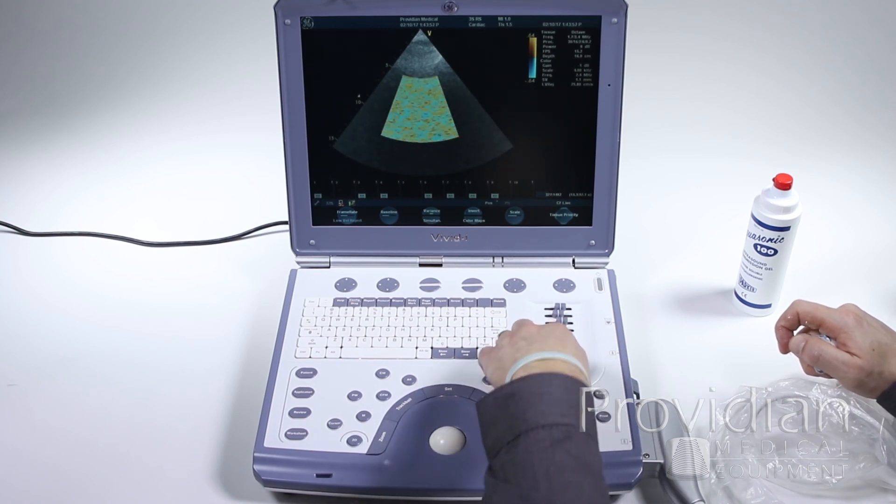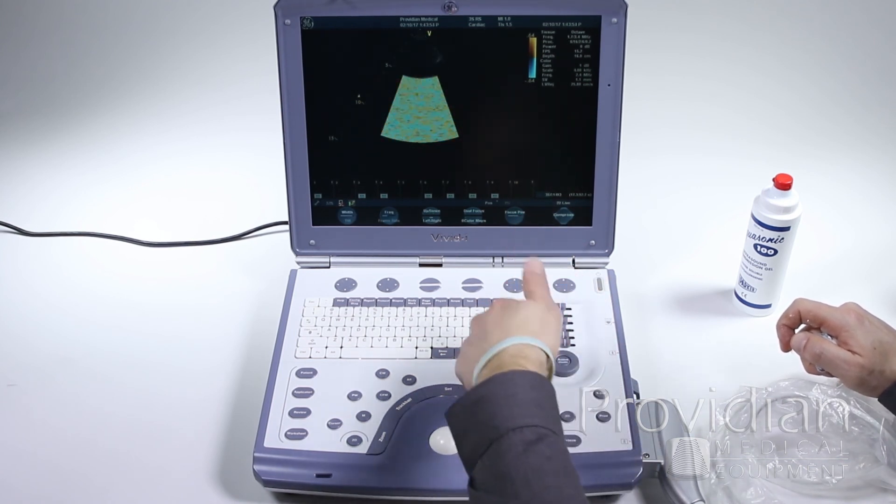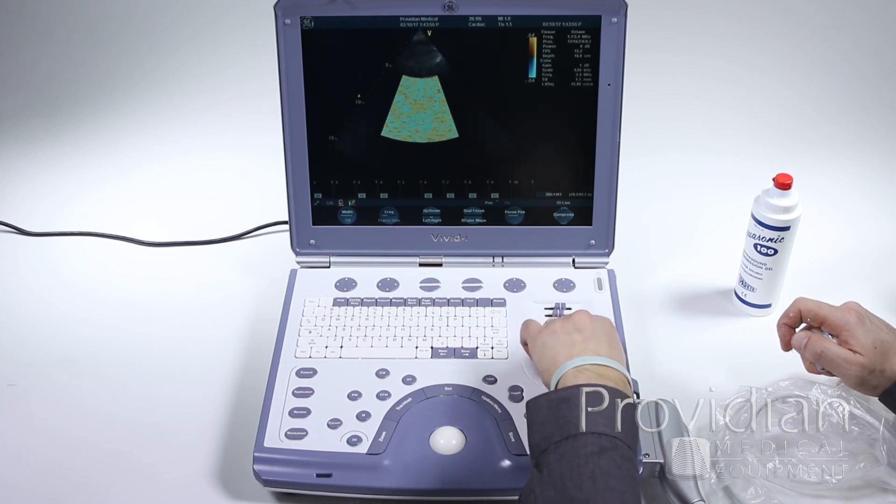You have your gain. I can press active mode. So if I push active mode down, it's going to change the 2D image. If I push it again, it's going to change the gain of the color image.